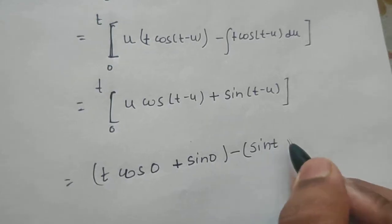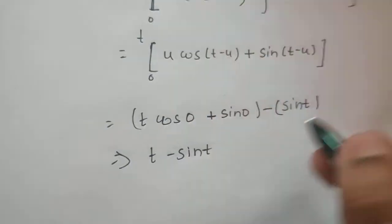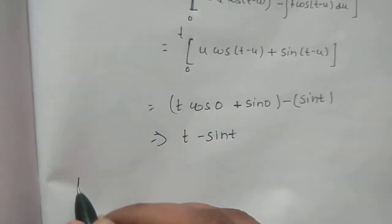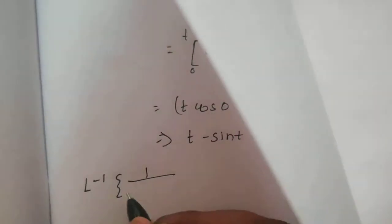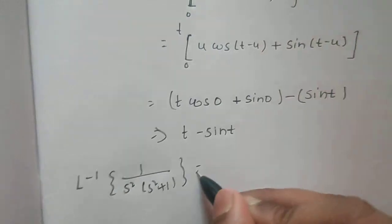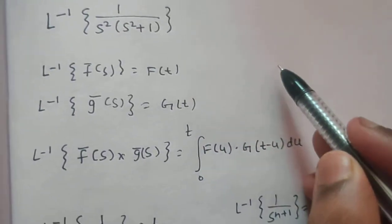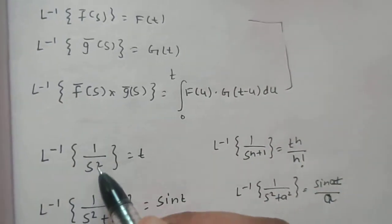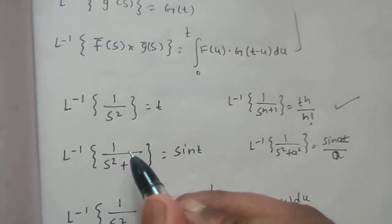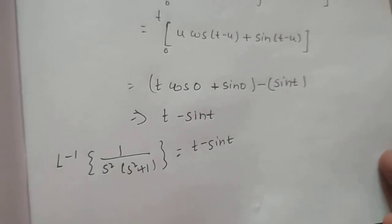So the final answer is t minus sin(t). To summarize: the Laplace inverse of 1/(s²·(s²+1)) equals t minus sin(t). We used the convolution theorem, the standard Laplace inverse formulas for 1/s² and 1/(s²+1), and then carried out integration by parts to arrive at the answer. Thanks and have a nice day.